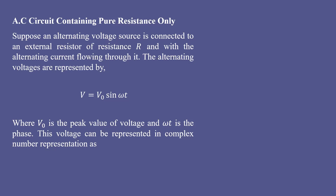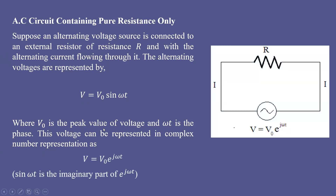Suppose an alternating voltage source is connected to an external resistor of resistance R, with alternating current flowing through it. The alternating voltage is represented by v = v₀ sin(ωt). Here v₀ is the peak value of voltage, and ωt is the phase of the AC signal — the angle is called the phase of AC.